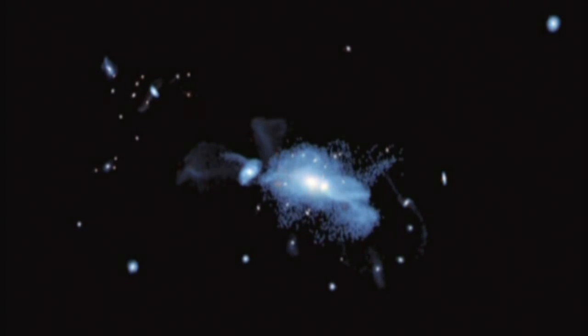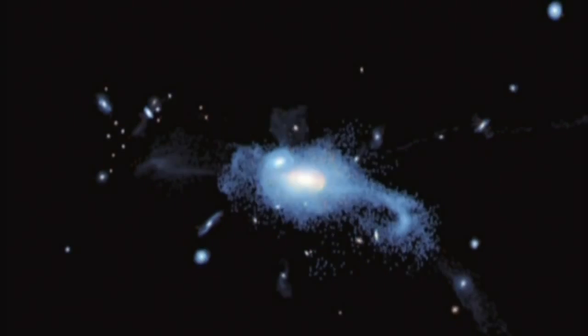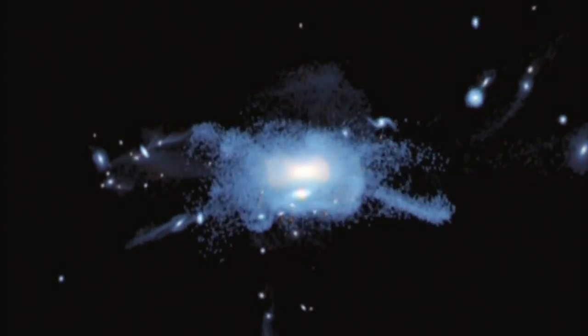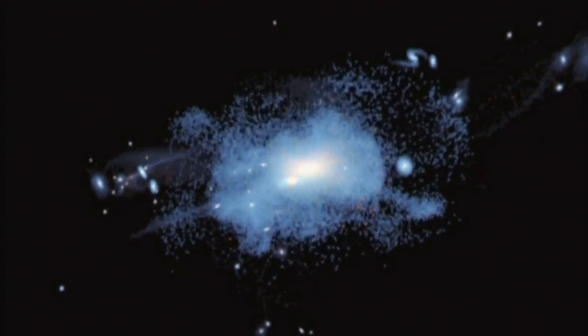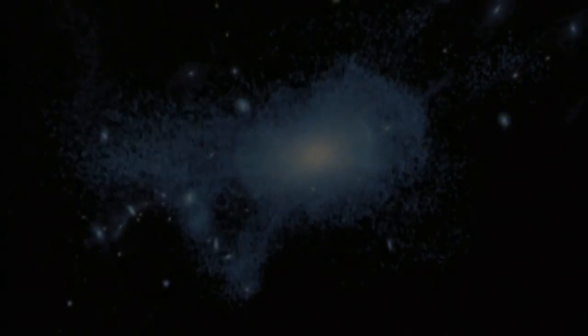The first stars and galaxies were born. Where the matter density was highest, at the intersections between the large web-like structures of matter, the largest structures we know were formed: clusters of galaxies.